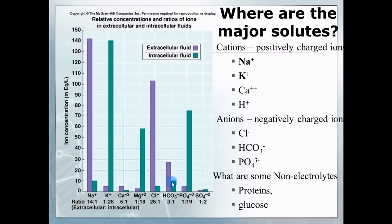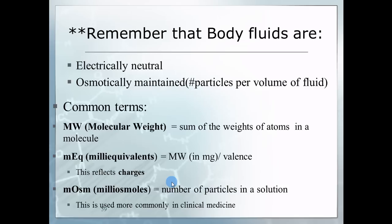A couple of things to remember: the body's fluids stay electrically neutral, though charge can shift between cells and extracellular fluid. Neurons and muscles use a charge difference across membranes, but overall the body maintains osmotically balanced fluids. Molecular weight refers to how heavy the particle is. Milliequivalents are used when measuring the volume of an electrolyte in your plasma. Millieosmoles describe osmolarity — body fluids are typically around 300 millieosmoles.